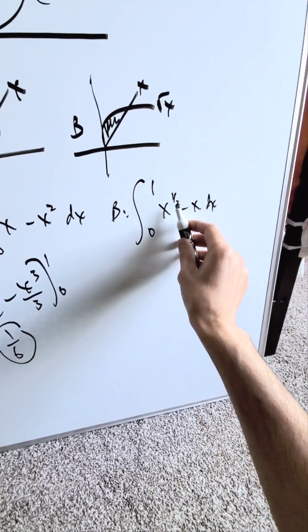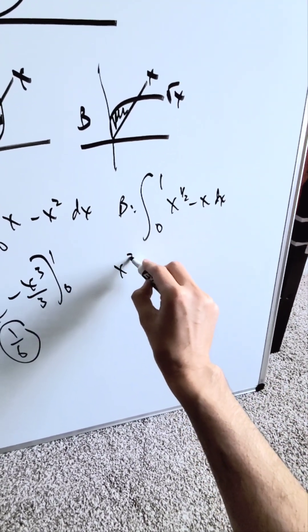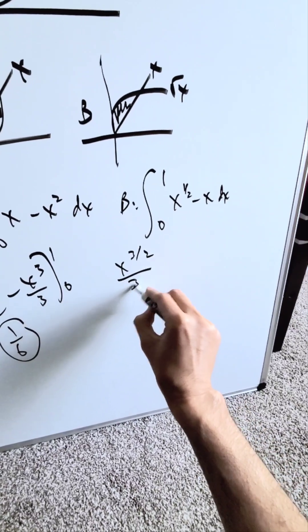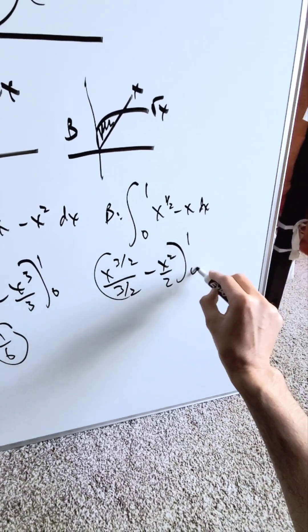Take this now to completion. I have x to the 1/2 plus 1 divided by 1/2 plus 1. This will be x to the 3/2 divided by 3/2 minus x squared over 2. You're putting upper limit 1 and 0.